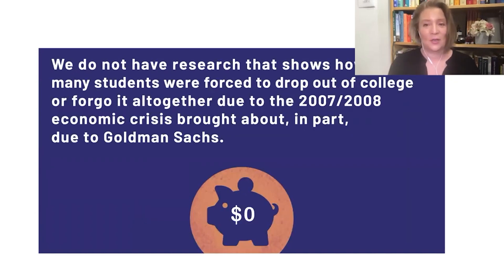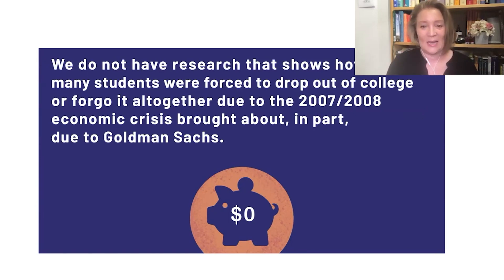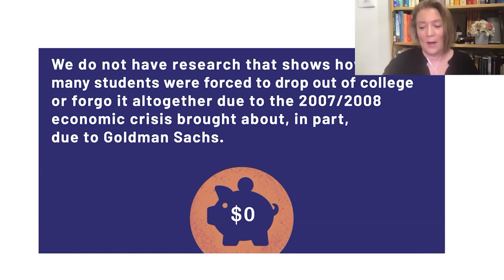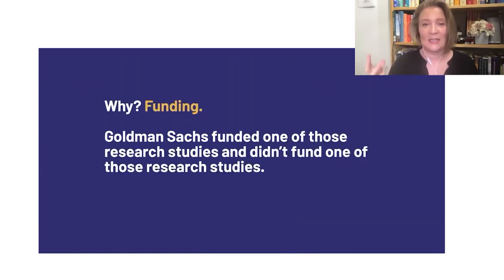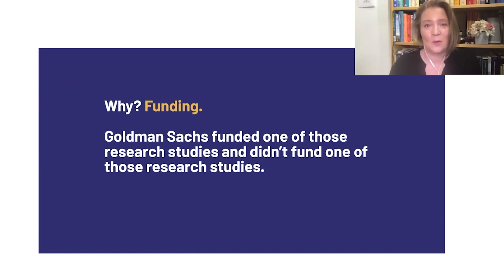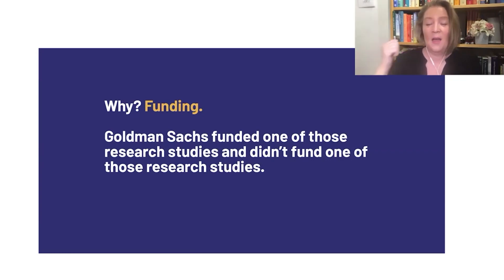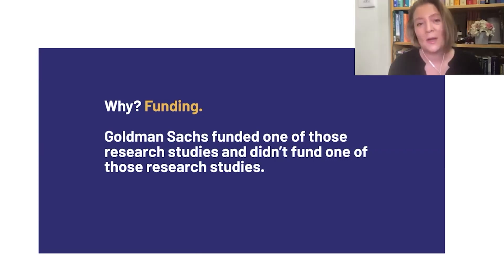You will not find research that shows how many students were forced to drop out of college or forego it altogether due to the 2007–2008 economic crisis brought about in part by Goldman Sachs. Why does some of that data exist and some of that data not exist? That's because of funding. Goldman Sachs paid for one of those research studies, one of those data sets to exist, and did not fund one of those other research studies. Funding has a direct effect on what data exists and from the data that exists, what it actually says.